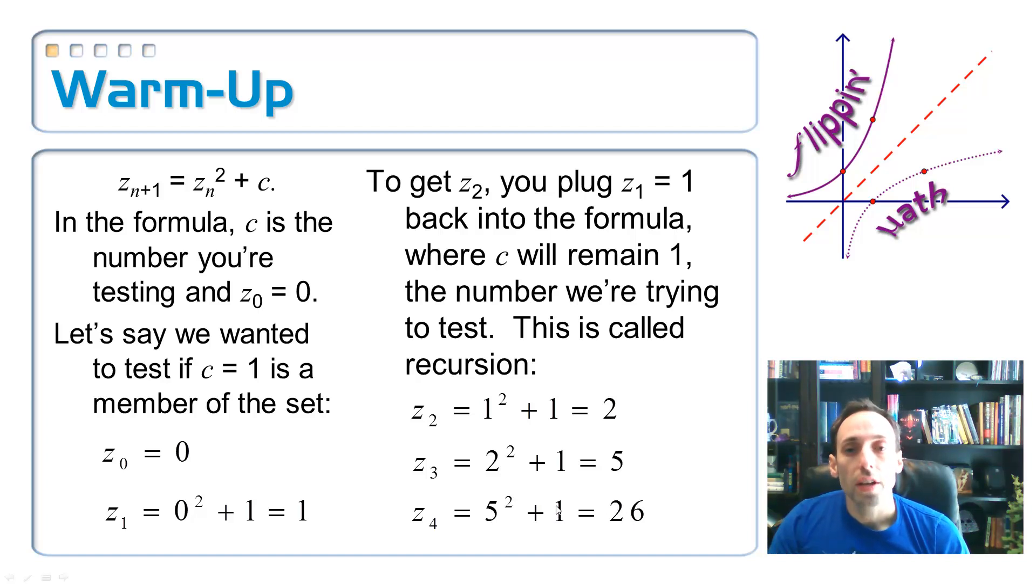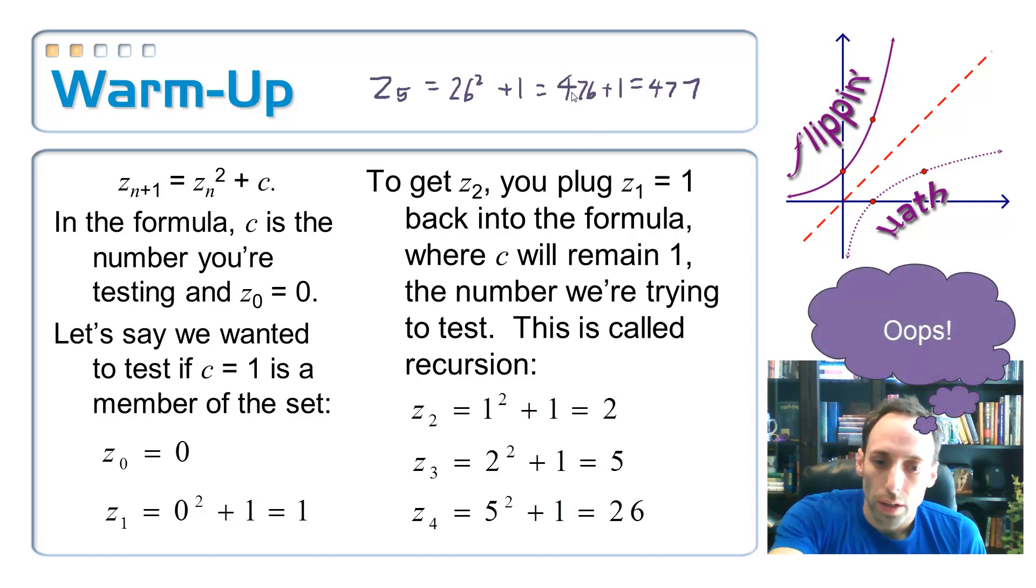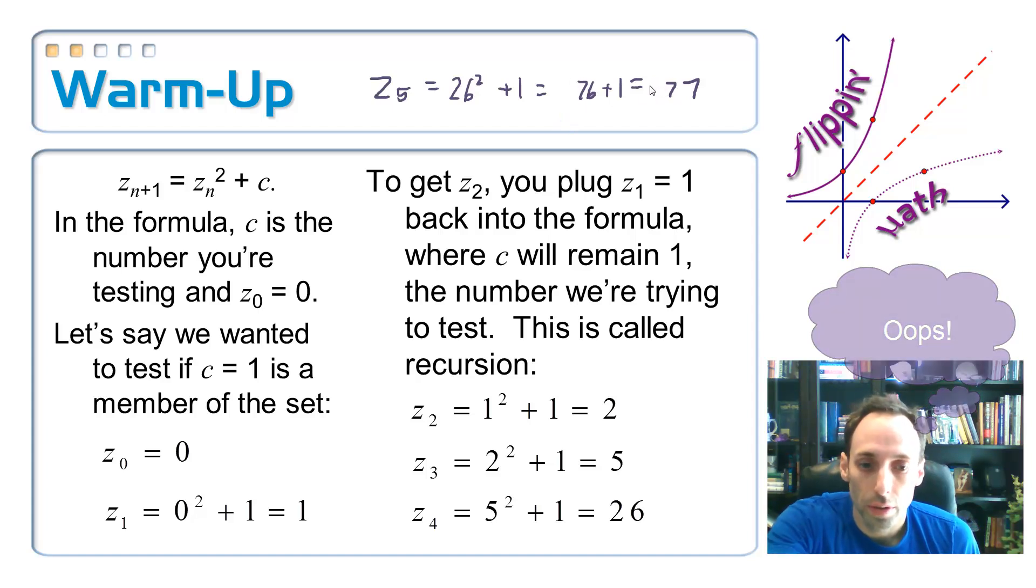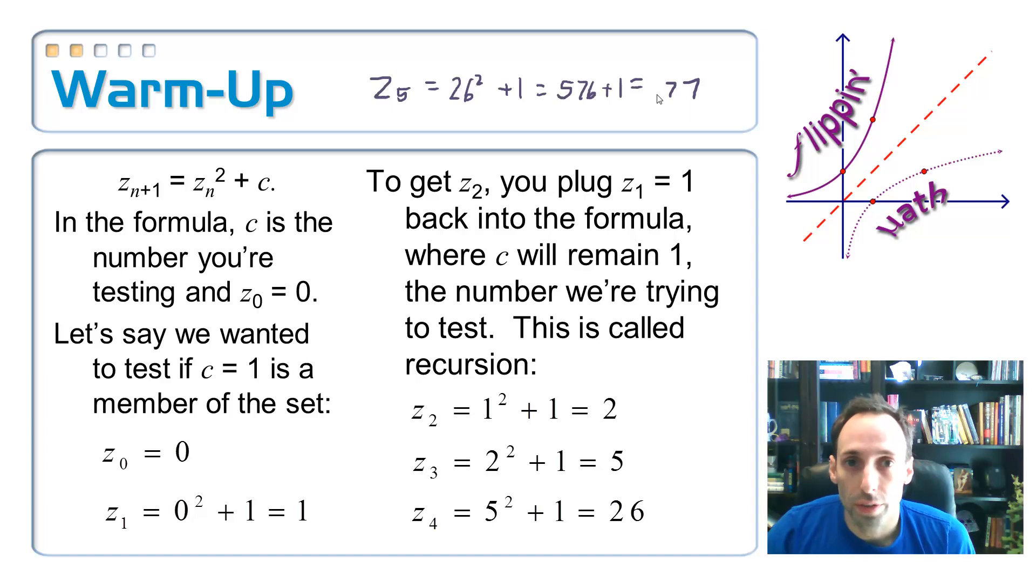So just so that you understand this, see if you can find out what Z sub five is going to be. So to get Z sub five, I have to take the 26 that I got down here, plug it back into this equation, 26 squared plus my C value is one. So 26 squared, I believe is 476 plus one makes 477. Except it's not. Let me go back and erase a little bit here. It's actually 576, which makes it 577 for the next number, and so on.